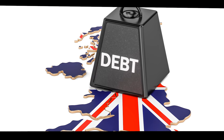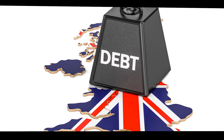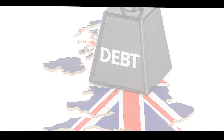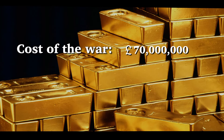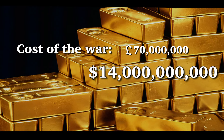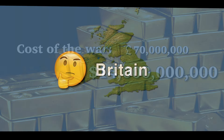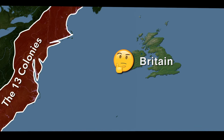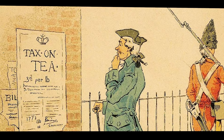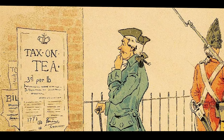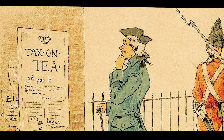Second, the French and Indian War had put Britain in a lot of debt. The war had cost about 70 million pounds, which is about 14 billion dollars today. Britain needed to find a way to cover the cost of the war, so they decided to start taxing the colonists. After all, the war started to protect colonists from attack — they should help pay for it too.